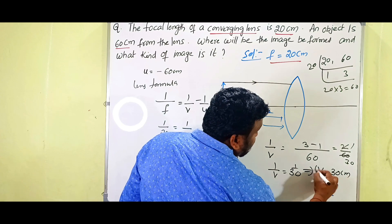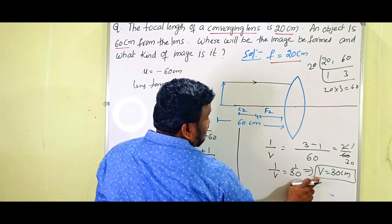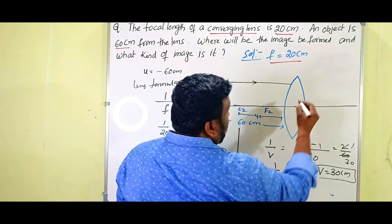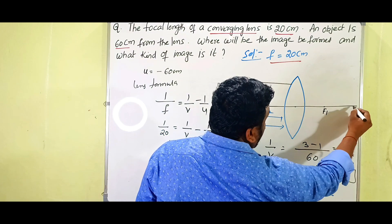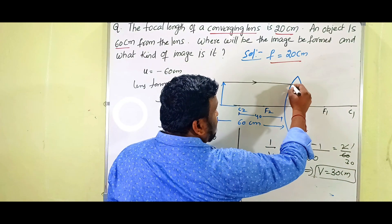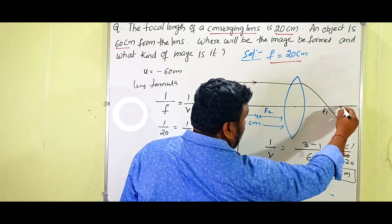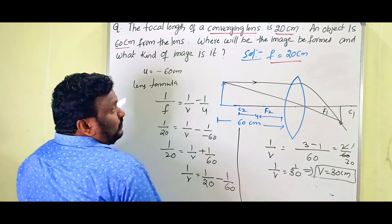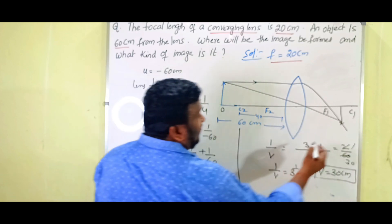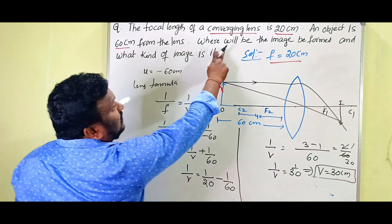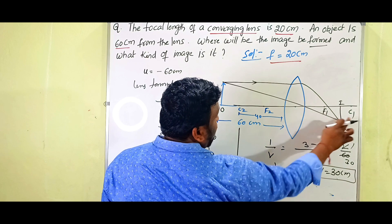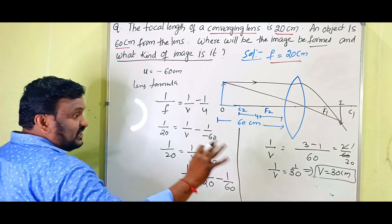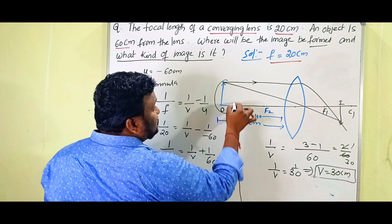Therefore v equals 30 centimeters. The image distance is 30 centimeters, meaning the image is formed at a distance of 30 centimeters on the other side of the lens. The image is formed between f1 and c1. In the question it asked where the image is formed — it is formed at 30 centimeters, between the focus and the center of curvature.